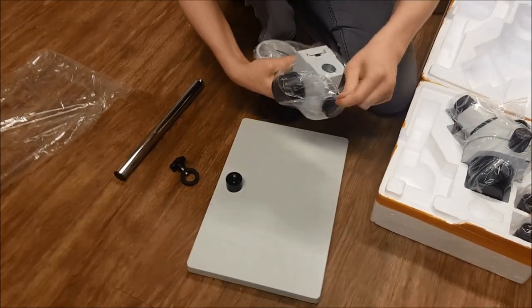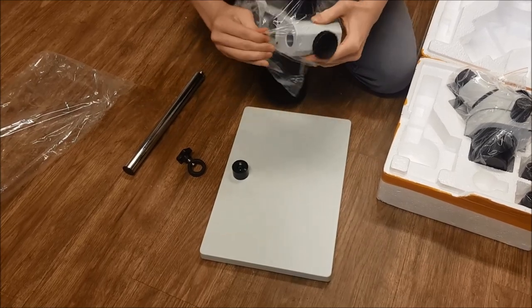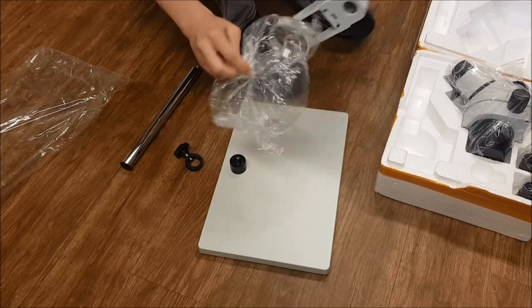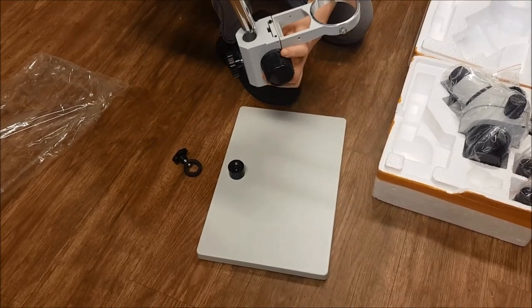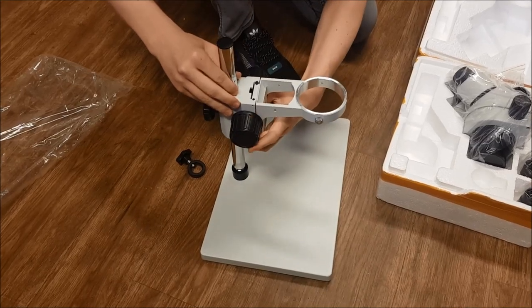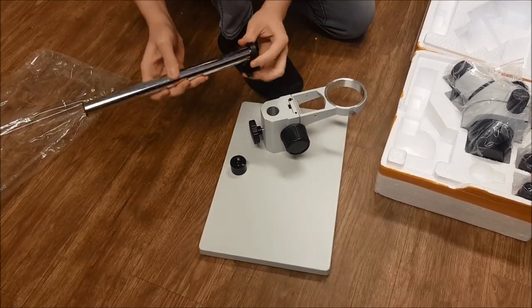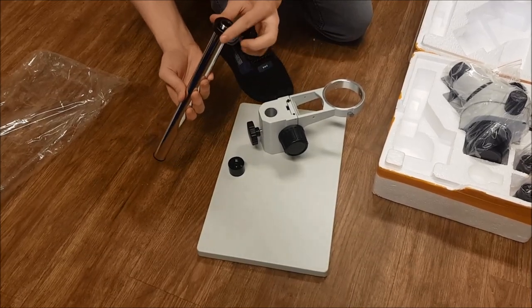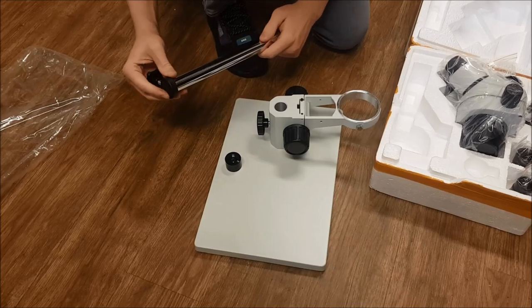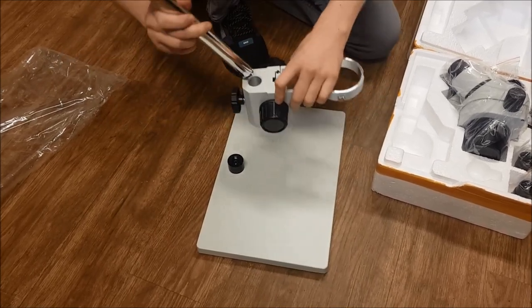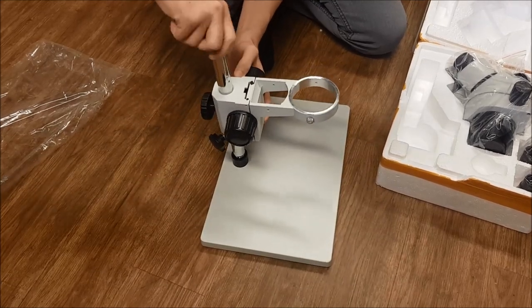Now let's begin with the arm that will hold the microscope. Then I'm going to be placing the actual pole through the arm and also the stopper. I'm going to just screw that in.